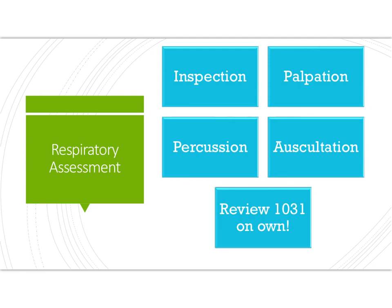For the physical respiratory assessment, you will use inspection, palpation, percussion, and auscultation. Inspect the nose for symmetrical nasal passages, and inspect chest rise and fall. If abnormal, use palpation to check if chest rise and fall is symmetrical. Percussion is mainly used by advanced practitioners to identify changes in the pleural cavity — fluid or solid masses. You should also be familiar with different types of adventitious breath sounds.